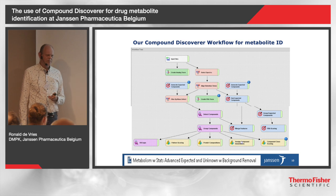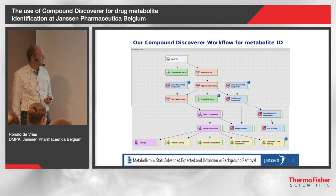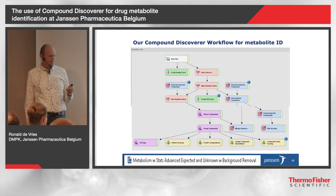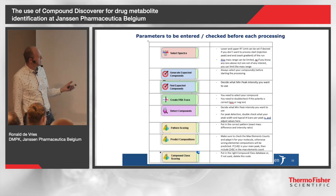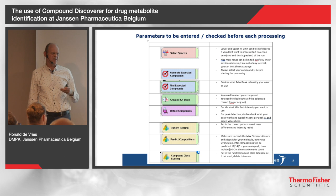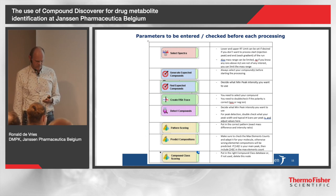But it can also be a bit frightening at the beginning for users that are not really accustomed to working with the software. So what we did is we prepared a document explaining each and every node with the standard parameters in there, and we made a table listing all the nodes where you need to have a look before starting your processing. You end up with a short list of parameters to check and maybe modify, so it's just easier to use for less experienced users.